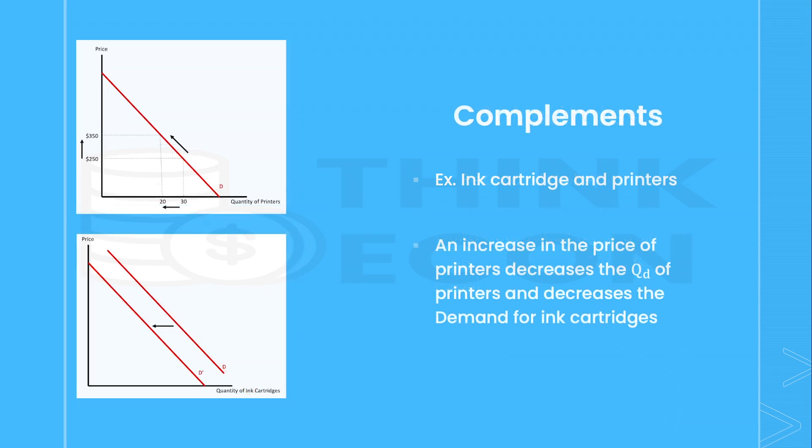Alternatively, we could have two goods that are consumed together, such as ink cartridges and printers. In the top graph, the price of printers increases from $250 to $350, so we see a decrease in the quantity demanded — a movement along the demand curve to the left. Since ink cartridges are complementary to printers, you will decrease the aggregate demand for them, which shifts the demand curve for ink cartridges to the left.